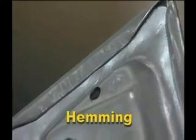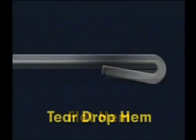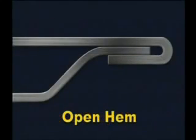In sheet metal forming, hemming is utilized primarily to provide a smooth rounded finished edge and to attach sheet metal parts together. There are four basic types of hems: the flat hem, which can be used with materials having high ductility; the teardrop hem, which is used on materials lacking the ductility required to form the flattened hem without cracking; and the open hem and the rope hem, which are used to join sheet metal parts together.